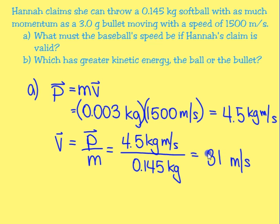You might wonder if this is realistic. Using Google to convert, 31 meters per second is about 69 miles per hour — a pretty reasonable speed for a pitcher to throw a softball. So Hannah's claim is valid.